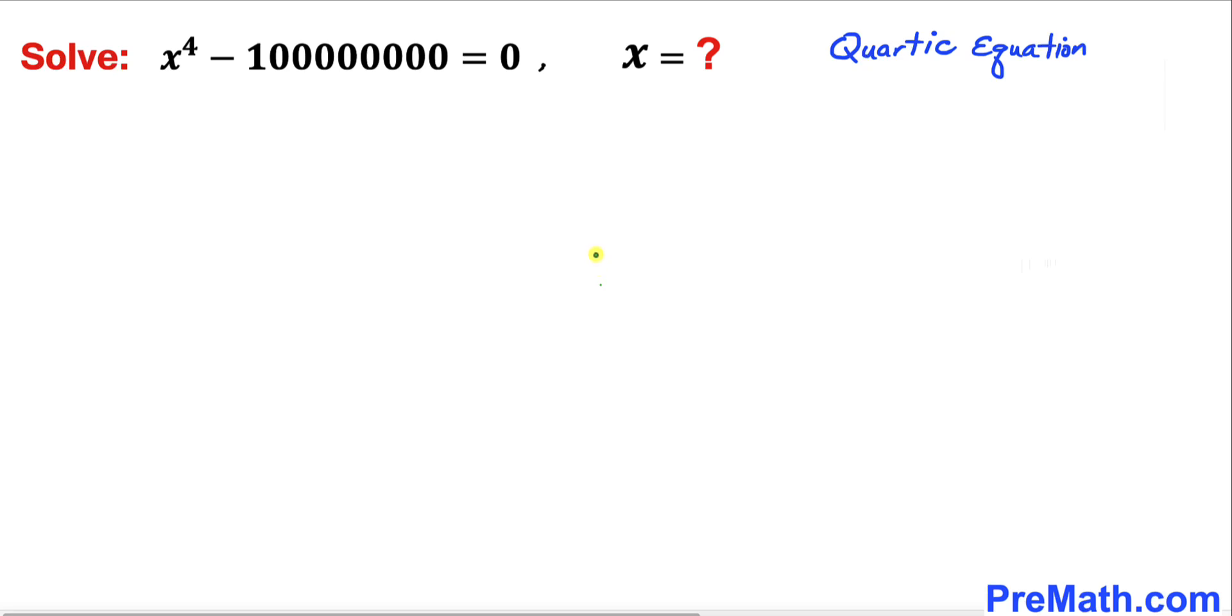Welcome to PreMath. In this video we are going to solve this given quartic equation x^4 - 100,000,000 = 0. Please don't forget to give a thumbs up and subscribe.